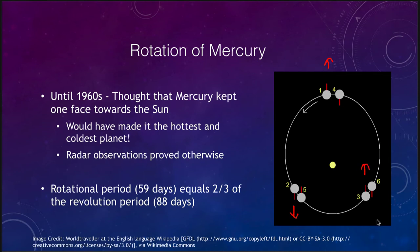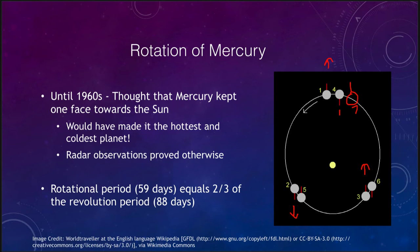Continuing through the diagram: one day later it points in another direction, the second day later it's around another position, and after six orbital positions, a seventh would bring it back to where it started. So once three days have occurred, that is the equivalent of two years — another example of an orbital resonance. This compares to the Moon, which is in a one-to-one resonance where its day and its orbital period around the Earth are exactly the same.